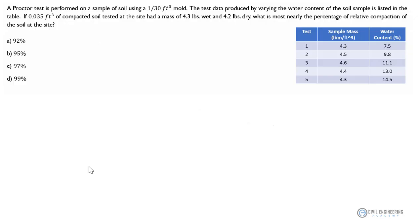Hey there engineers, welcome to Civil Engineering Academy. Once again we're looking at a problem from geotechnical engineering, and this one deals with relative compaction and proctor testing. The problem reads: a proctor test is performed on a sample of soil using a 1/30th of a cubic foot mold, which is a standard size for proctor tests. The test data produced by varying the water content of the soil sample is listed in the table.